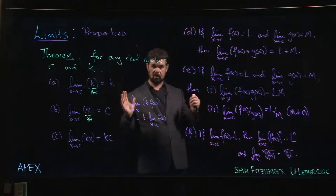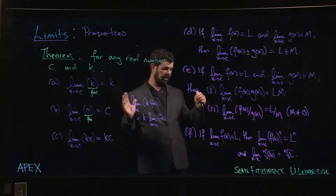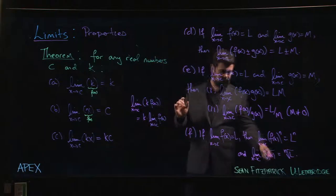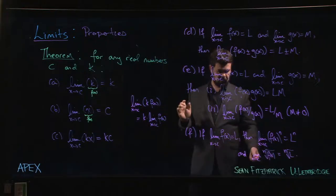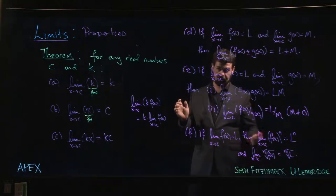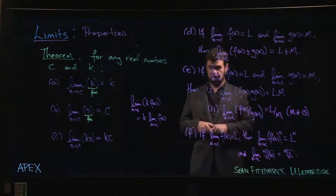Near c, in order to be able to take that limit. So you actually need to make sure that f of x is positive on some interval containing c, or at least non-negative on some interval containing c. Then you can apply that rule if you're dealing with an even root.